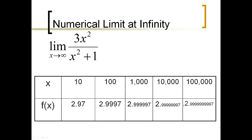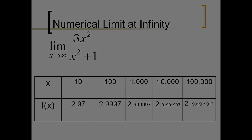Your calculator will probably give up and declare it to be 3, but it never actually gets there. What's happening is, as x gets bigger and bigger, the x squared term really takes over. So x squared and x squared plus 1, as x gets gigantic, are virtually the same thing — this whole part cancels out, leaving us with 3.